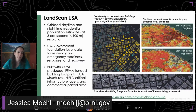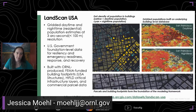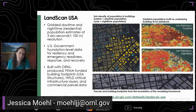This presentation is about LandScan USA, which is what we developed this framework for. LandScan USA is a gridded daytime and nighttime population estimate. It's a three arc second resolution raster dataset — there's a daytime raster and a nighttime raster. You can see, in San Francisco on the right-hand side, there is a big difference in population day and night in the downtown area. These gridded datasets are used by the US government as a foundation level dataset funded for planning, resiliency, emergency readiness and response, and recovery efforts as well.